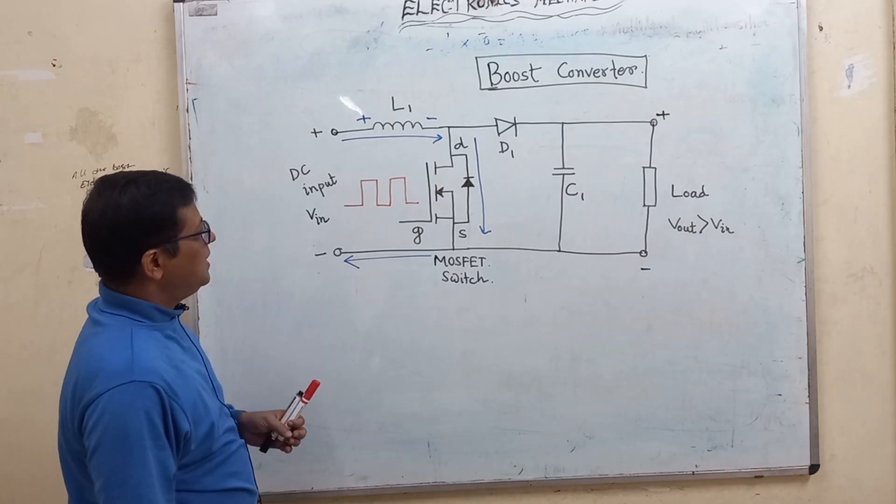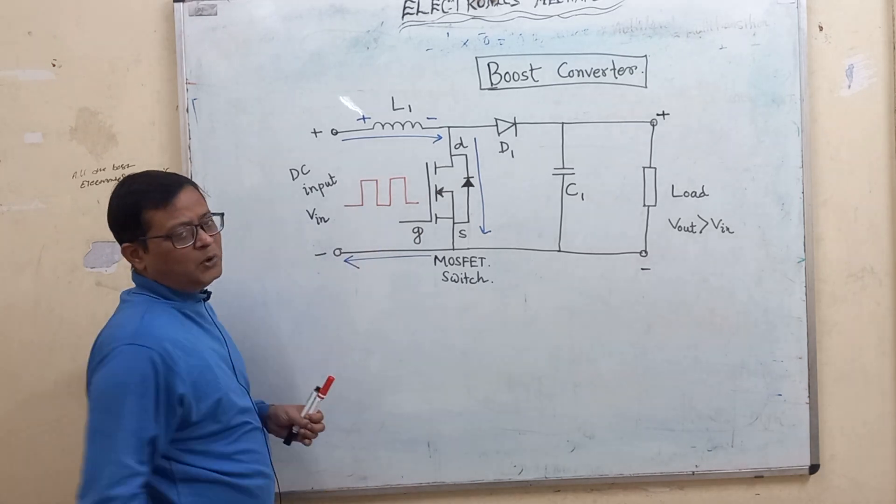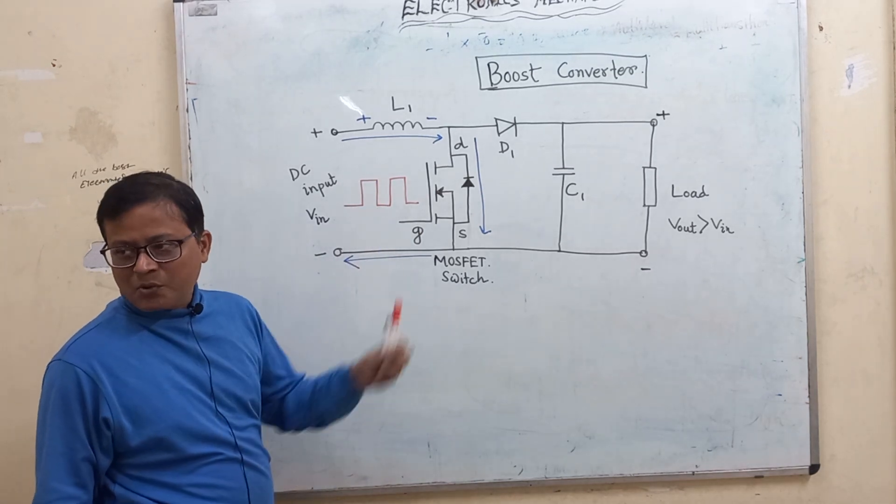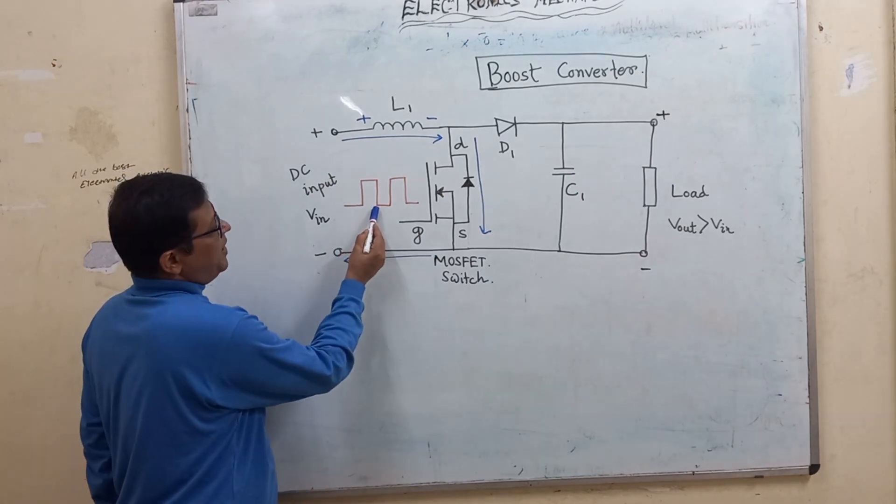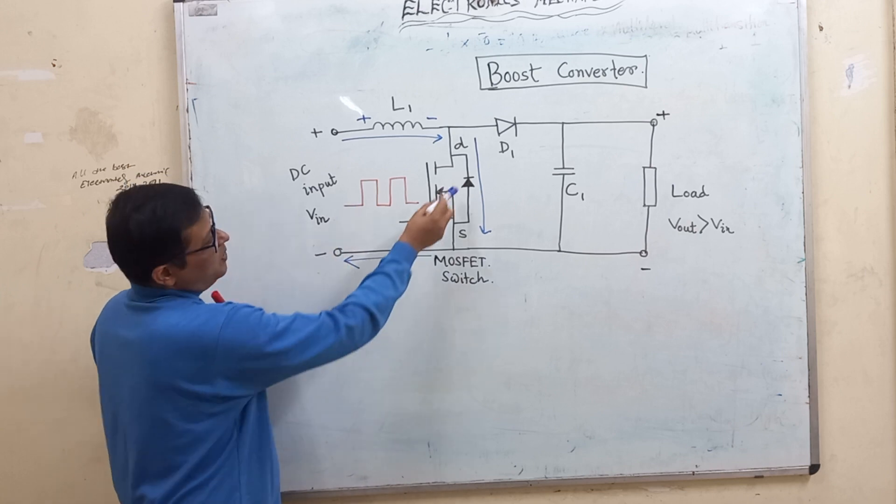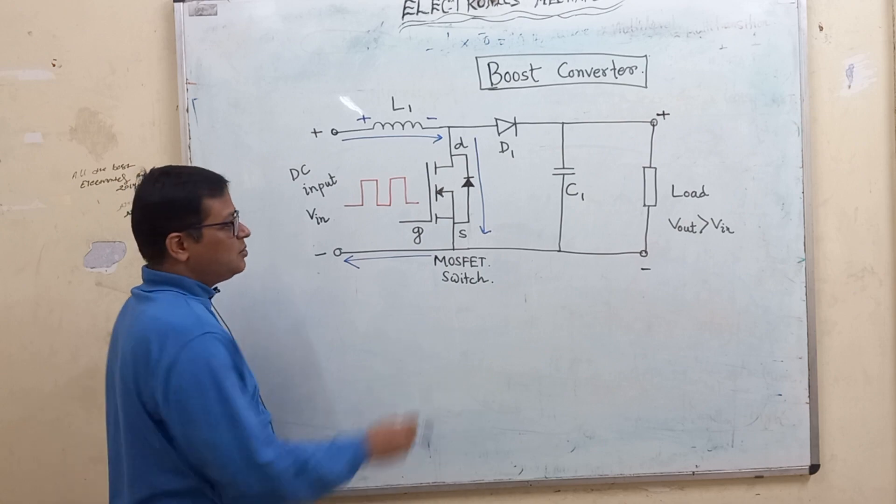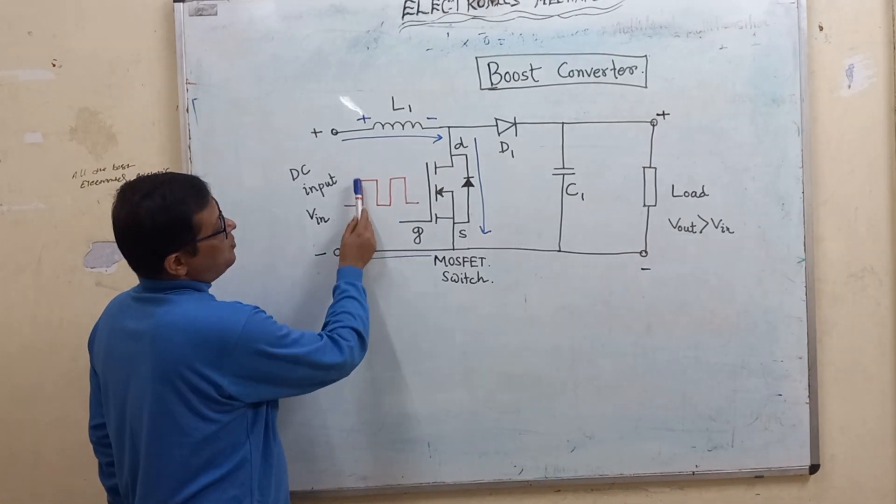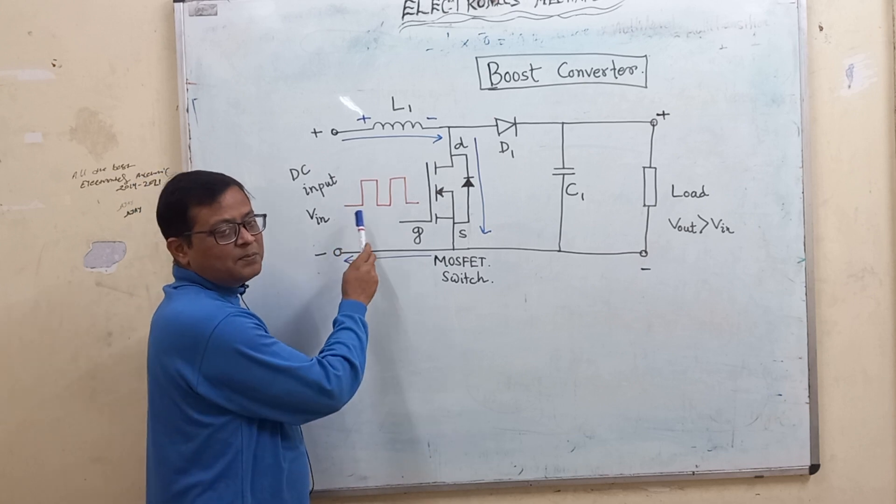This time, the gate is called PWM. This is the square wave. During the positive cycle, this is the positive pulse.